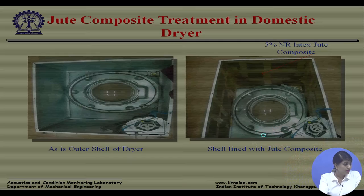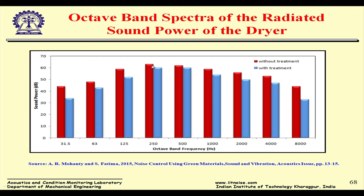For a domestic dryer costing 20,000 rupees, adding this inexpensive jute material achieves a 6 dB noise reduction — quite remarkable. People are increasingly looking for quieter appliances as we live in dwellings where vacuum cleaners, refrigerators, and other appliances are very close by. The octave band spectra show significant reduction in radiated sound power across frequency bands when jute treatment is applied.